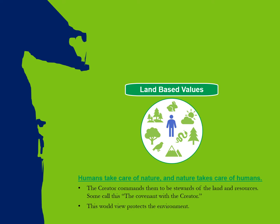Before we launch into the history of industry in Washington State, let's take a moment to situate ourselves in context. Long ago, since time immemorial, thousands and thousands of years ago, the people who lived on this land believed in what we've been calling land-based values — working in harmony with nature, in cooperation with nature, still using nature as a resource, but in a way that really puts human beings in cooperation with the world around them.